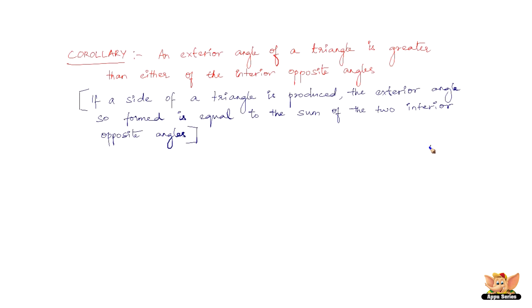Now that is, say for example, we've got a triangle here, ABC. Now, this statement in the brackets says that if a side of a triangle, let us take BC, if it is produced, say it is produced to D, then the exterior angle so formed. This is the exterior angle so formed.